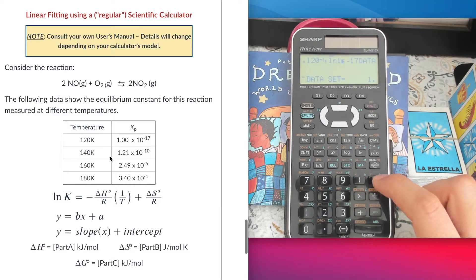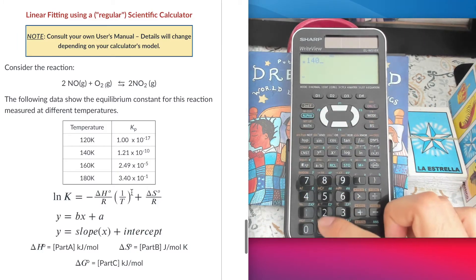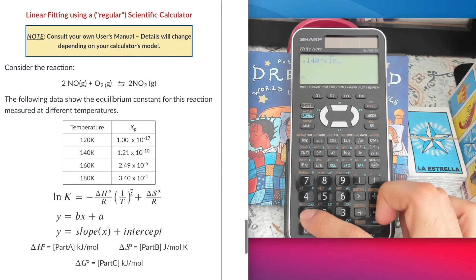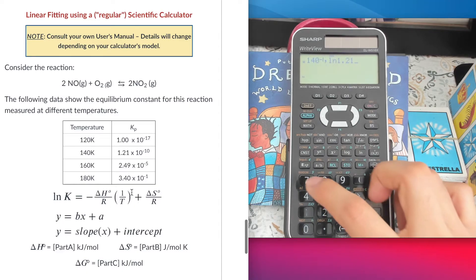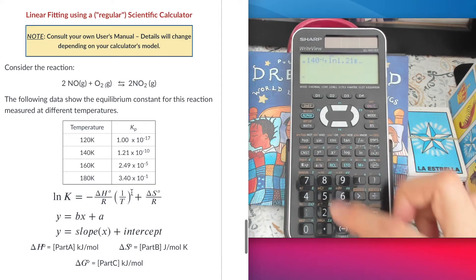The second, I go to the second temperature, I take the inverse of that, so 140 inverse of that temperature, comma natural log of the equilibrium constant at that temperature, so that's 1.21 times 10 to the minus 10. That's my second data point.